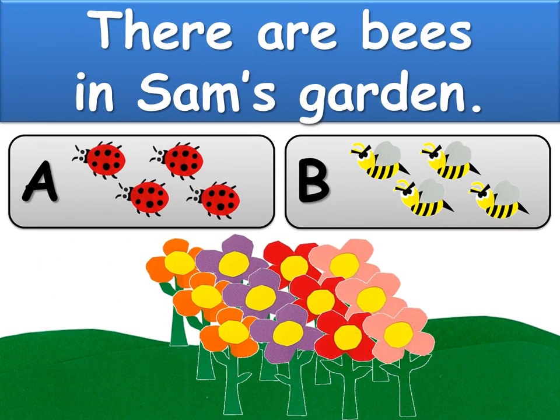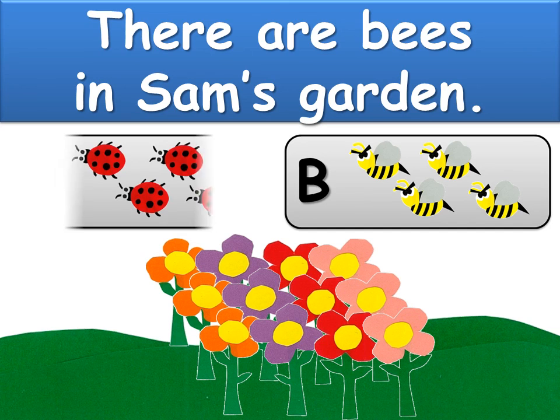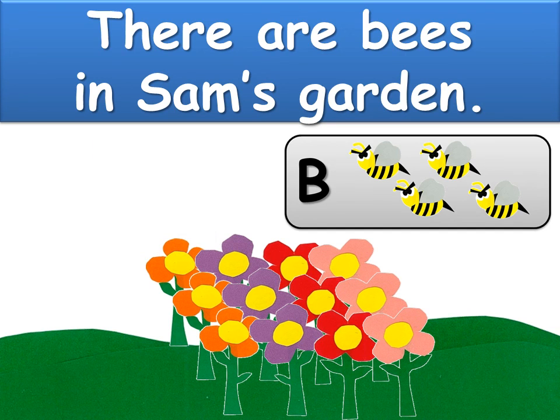There are bees in Sam's garden. Is the answer A or B? It's B.